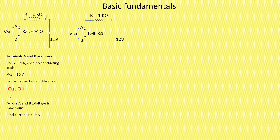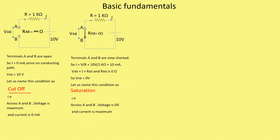And if I measure the voltage across A and B, VAB, that is equal to zero, because VAB is equal to current into resistance according to Ohm's law, but resistance across A and B is zero ohms. So the voltage across A and B would be equal to zero volts. In this case, we are getting VAB equal to zero volts and current is maximum, equal to 10 milliampere. This particular condition is known as saturation.